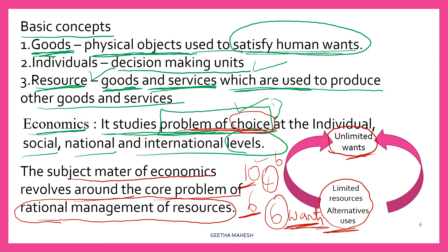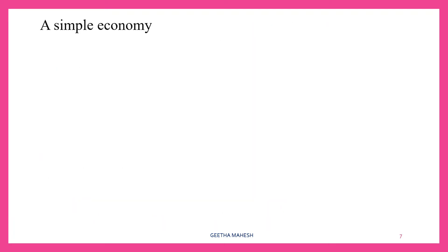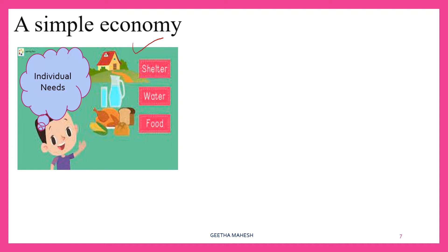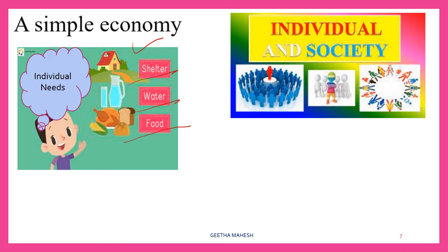Now let us understand a simple economy. You think of any society — people in this society need many goods and services. Similarly, like an individual, the whole society needs so many goods and services. Goods here refers to food, cloth, shelter, transportation facilities like road, railway, postal service, etc. And you can also consider services like a teacher and doctor. All these are very, very essential.